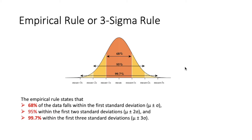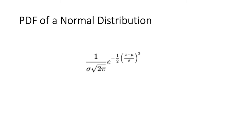If you remember from our PDF video, every distribution has a defined probability density function. For the normal distribution, the probability density function is given as: 1 divided by sigma times the square root of 2π, multiplied by e raised to the power of minus one-half times ((x minus mu) divided by sigma) squared.